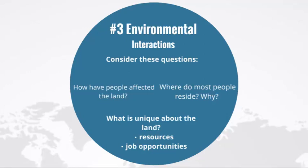The next theme is environmental interactions. Here you're going to be really considering the interaction between human beings and their environment. This occurs because humans depend on or adapt to the world around them. Human society and the environment can't be separated — each one shapes and is shaped by the other. Some places are the way they are because people changed them to keep up with economic demands or the job industry.